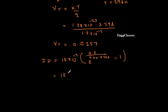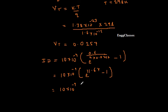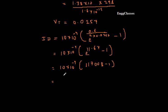So we get 10 into 10 to the power minus 9 into exponential of that term. Using the calculator: 0.6 divided by 2 into 0.0257 gives 11.67 minus 1. E to the power 11.67 turns out to be 117008, minus 1 which is negligible, and multiplying with 10 into 10 to the power minus 9, we get 1.17 milliamps.